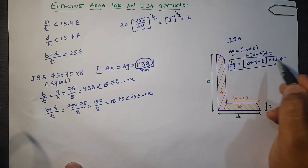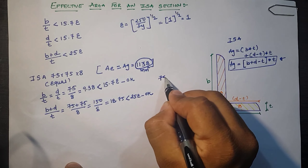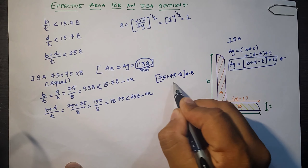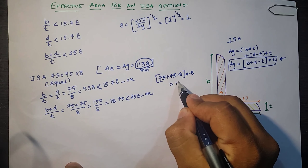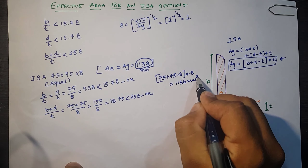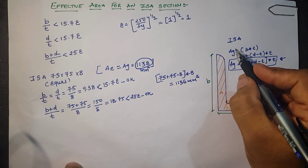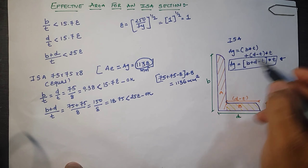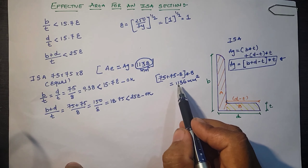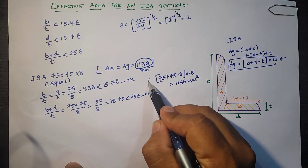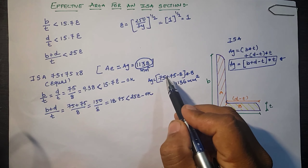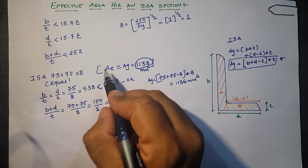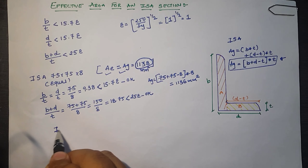Using our derived equation: Ag = (75 + 75 − 8) × 8 = 1136 mm². The difference from the steel table value is only 2 mm², confirming the equation is a good approximation. Since all criteria are satisfied for this equal angle section, Ae = Ag.